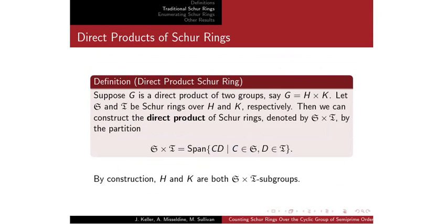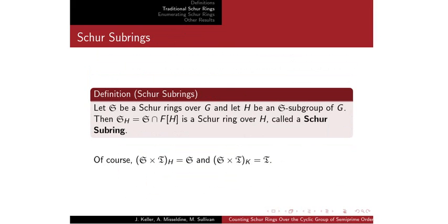Next, we'll move on to direct products of Schur rings. If we have two Schur rings S and I, and if we can divide G into a direct product of H and K where H and K happen to be S and I subgroups, then S and I are Schur rings over H and K respectively, and we can take their direct product — this itself will be a Schur ring. Next, we'll talk about Schur subrings: for a Schur ring S over G and H, which is some S-subgroup, if we intersect S with the group algebra over H, we get a Schur subring over that group algebra. With the right choice of H and I, we can recover all of the original Schur rings.